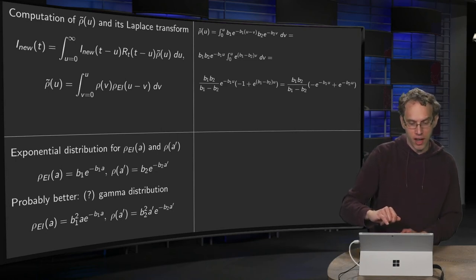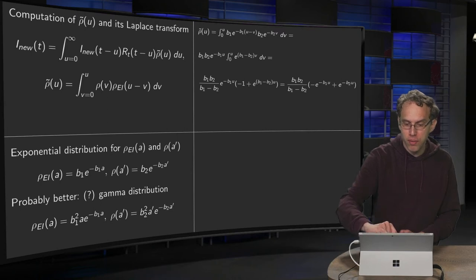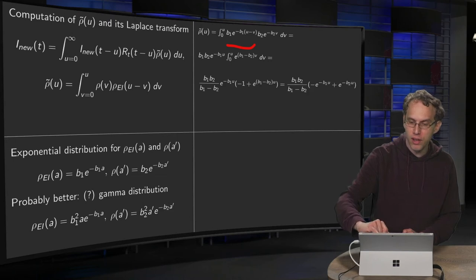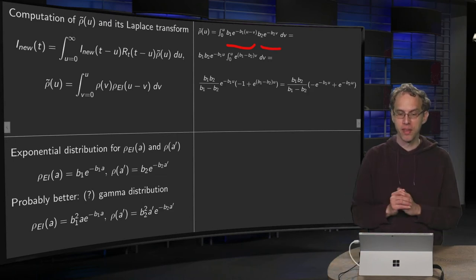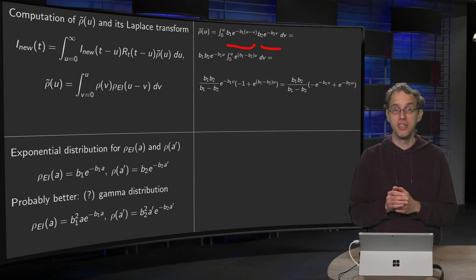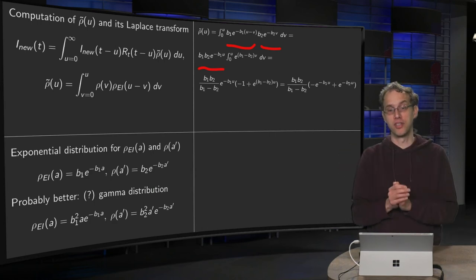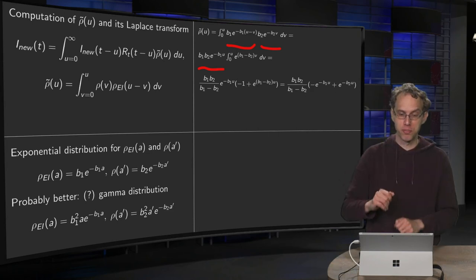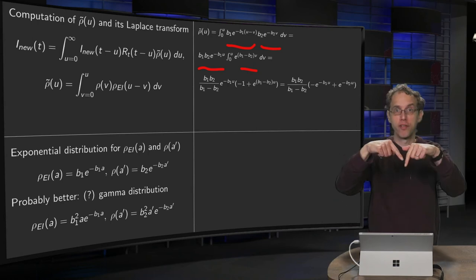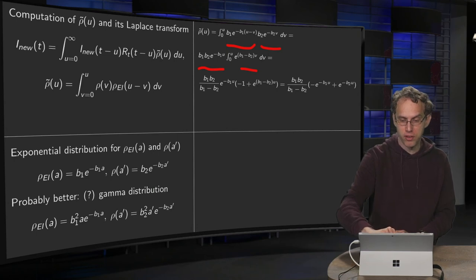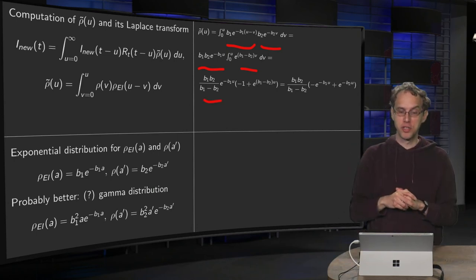So you have your ρEi of u minus v over here, and you multiply with your ρ of v over there, and then you integrate it with respect to v, which means that you can take this term which only has u in front, take some of the constant in front of the integral, and you have just an exponential function e to the power of b1 minus b2 times v. The antiderivative is easy. It's 1 over b1 minus b2 times your exponential, so you have this additional factor, 1 over b1 minus b2.